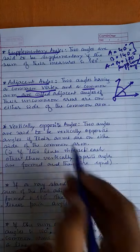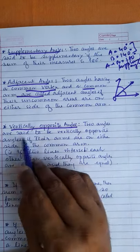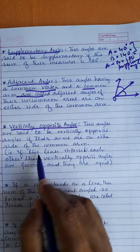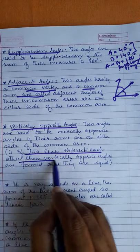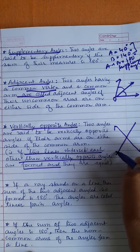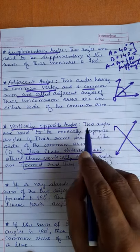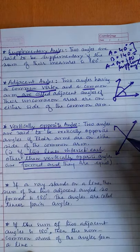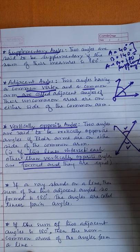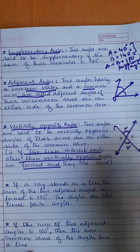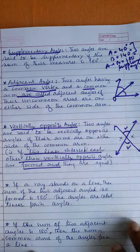Vertically opposite angles — two angles are said to be vertically opposite if their arms are on either side of the common point. When two lines intersect each other, vertically opposite angles are formed and they are equal. These two angles are vertical opposite angles, and these two are also vertical opposite angles. Vertically opposite angles are equal.